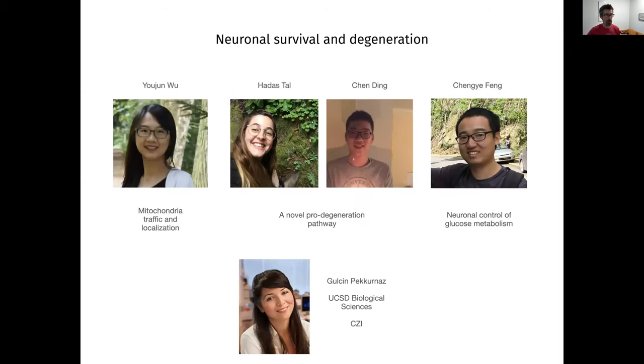And some current people and projects in this area are Yujin Wu, who's studying inside neurons how mitochondria traffic and localize to the correct place. Adas Tal and Chen Ding, who are characterizing a novel pro-degeneration pathway. And in collaboration with Sean Ferguson and Cell Biology, we've discovered that this pathway also seems to regulate degeneration in human IPS neurons. Chen Yi Feng, a new postdoc who actually joined the lab during coronavirus, who's working on neuronal control of glucose metabolism. And I'm showing here our collaborator, Guljan Pekernas, who's faculty at UCSD with whom we just got a CZI grant to also work on aspects of metabolism and degeneration.